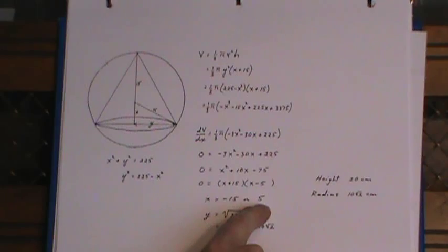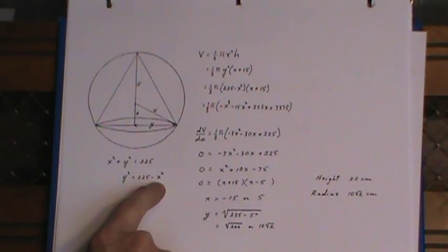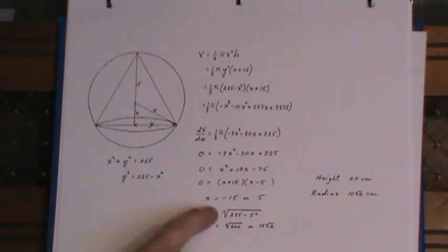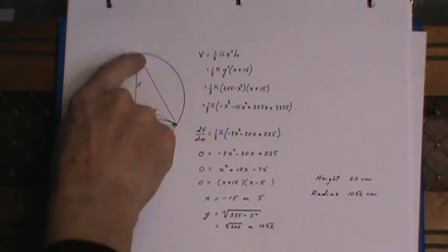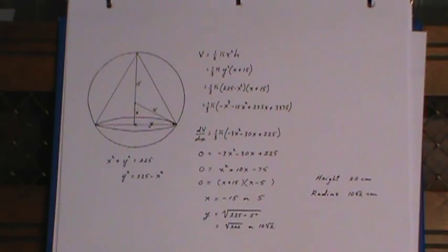If I now want the value for y I'll just come over here, put the 5 in for the x and then take the square root. So my height is 20 centimeters that's the 5 plus the 15, and the y value here which I've just reduced to its radical form is the radius of the cone.